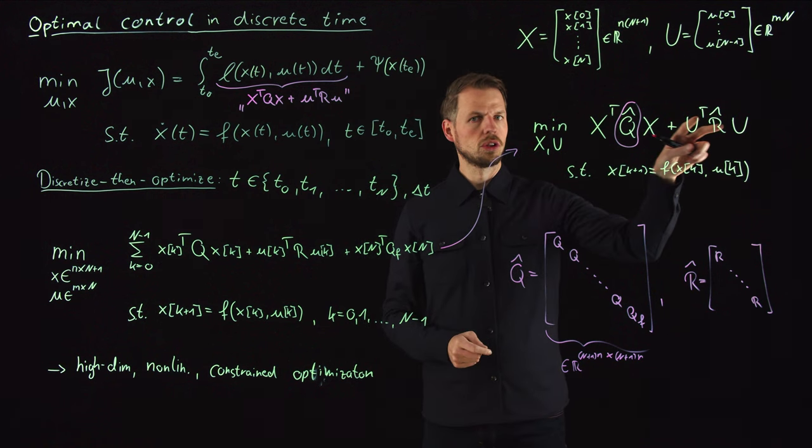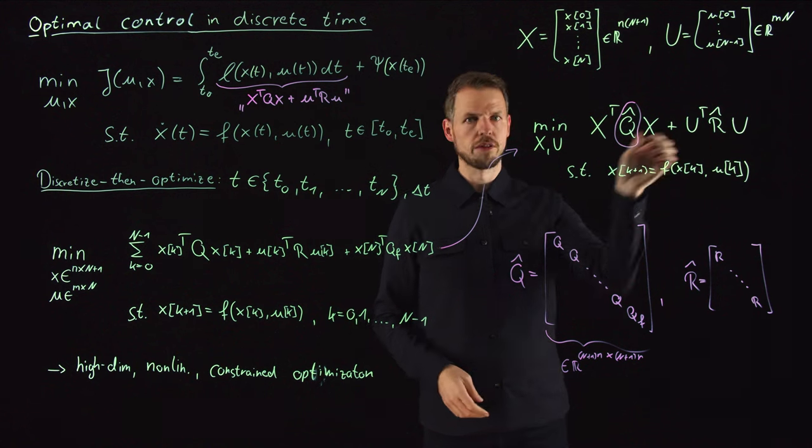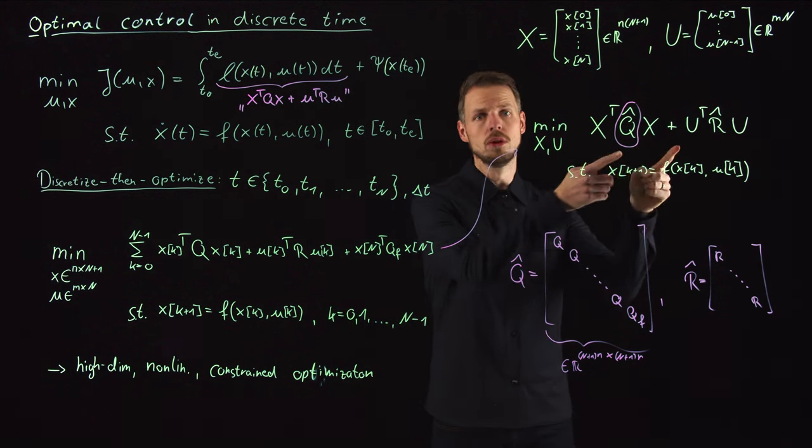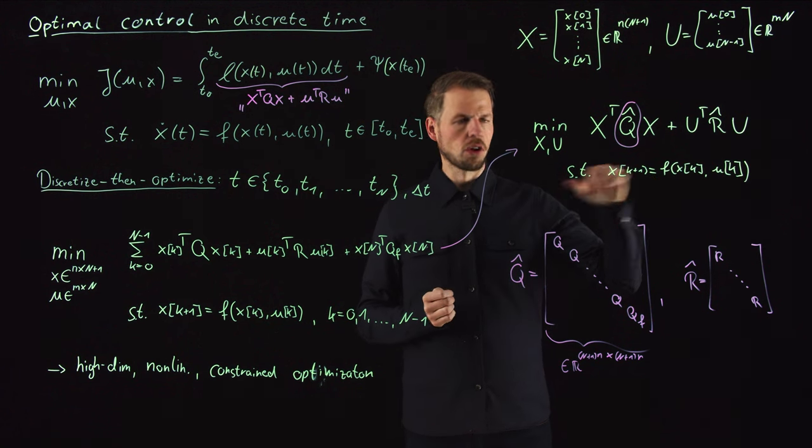But the loss function or the objective function looks very nice. You see it's a quadratic function in x and u, which is basically the dream formulation. And what's bothering me is these constraints.